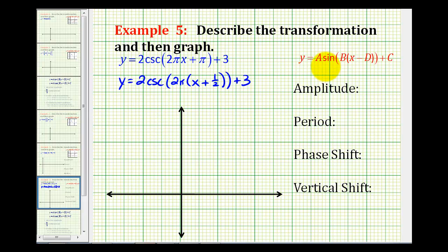And even though we're referencing the sine function here, we should recognize that a is equal to two, b is equal to two pi, d is equal to negative one half, if it has to be x minus d, and c would be equal to positive three.